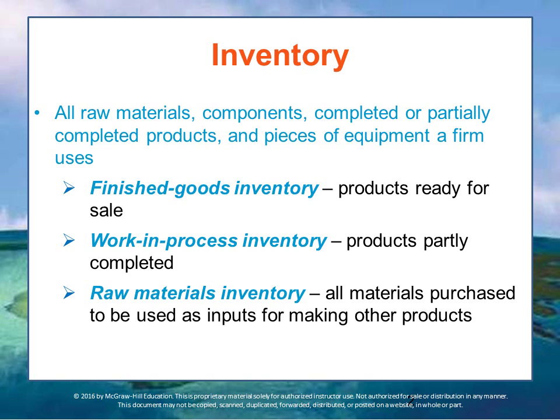Lastly, raw materials inventory includes all the materials that have been purchased to be used as inputs for making other products. Nuts and bolts are raw materials for an automobile manufacturer, while hamburger patties, vegetables, and buns are raw materials in the food industry.